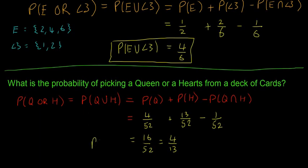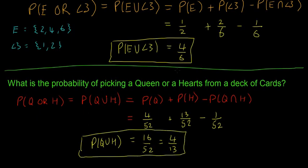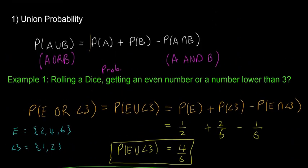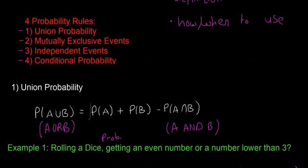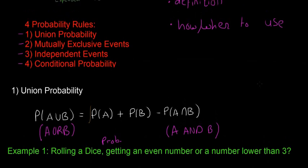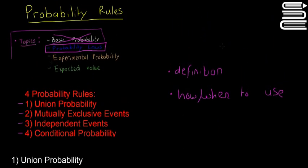So P(queen or hearts) = 4/13. Hopefully that shows you this rule and why it's useful. These are both quite simple examples, but you can get more difficult ones that are hard to figure out in your head — just use this formula. That is union probability, the first of the probability rules. You use it when they ask an 'or' question with a crossover. In the next few videos we'll look at mutually exclusive events and independent events. Hope you found the video useful — see you next time!